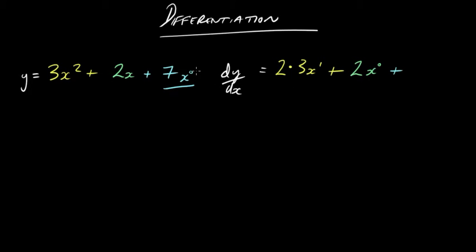So really we can say that this here is 7x to the 0. And then if we differentiate it, we bring the power down in front. So it becomes 0, lots of 7x to the minus 1. But anything multiplied by 0 is 0. So that's a long-winded way of doing it, but just to prove where it all comes from.